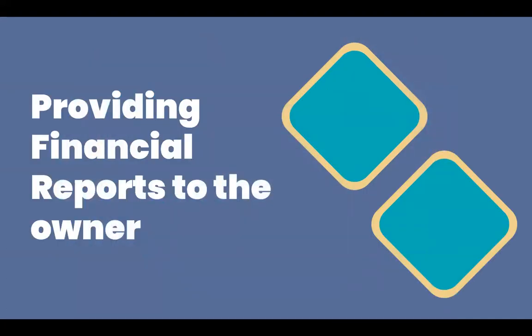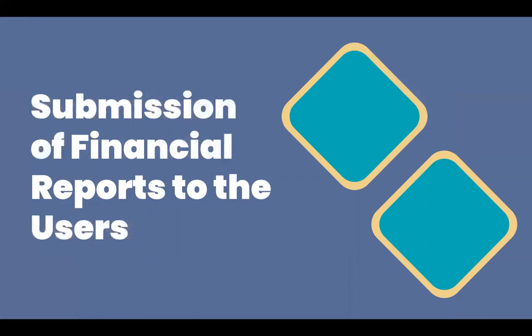Providing financial reports to the owner: the journals have to be summarized by the firm's bookkeeper so that financial reports can be made. There are three basic financial reports that a bookkeeper should prepare: the income statement, balance sheet, and cash flow statement. These will be thoroughly discussed in lesson 4. Submission of financial reports to users: the objective of preparing financial reports is for the intended users to be aware of the financial information. It is the task of the bookkeeper to submit these financial reports promptly. The users could be internal, such as owners and managers, or external, such as government agencies and creditors.